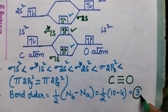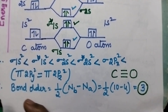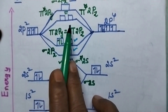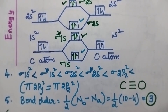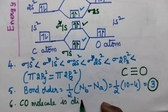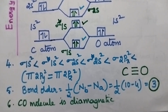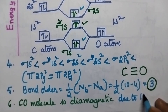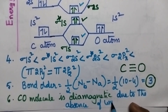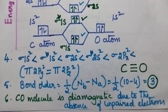The bond order of CO molecule is 3, meaning a triple bond is present between the carbon and oxygen atoms. Coming to the magnetic behavior, if you carefully watch the molecular orbital diagram, no unpaired electron is present, hence CO molecule is diamagnetic in nature, due to the absence of unpaired electrons.